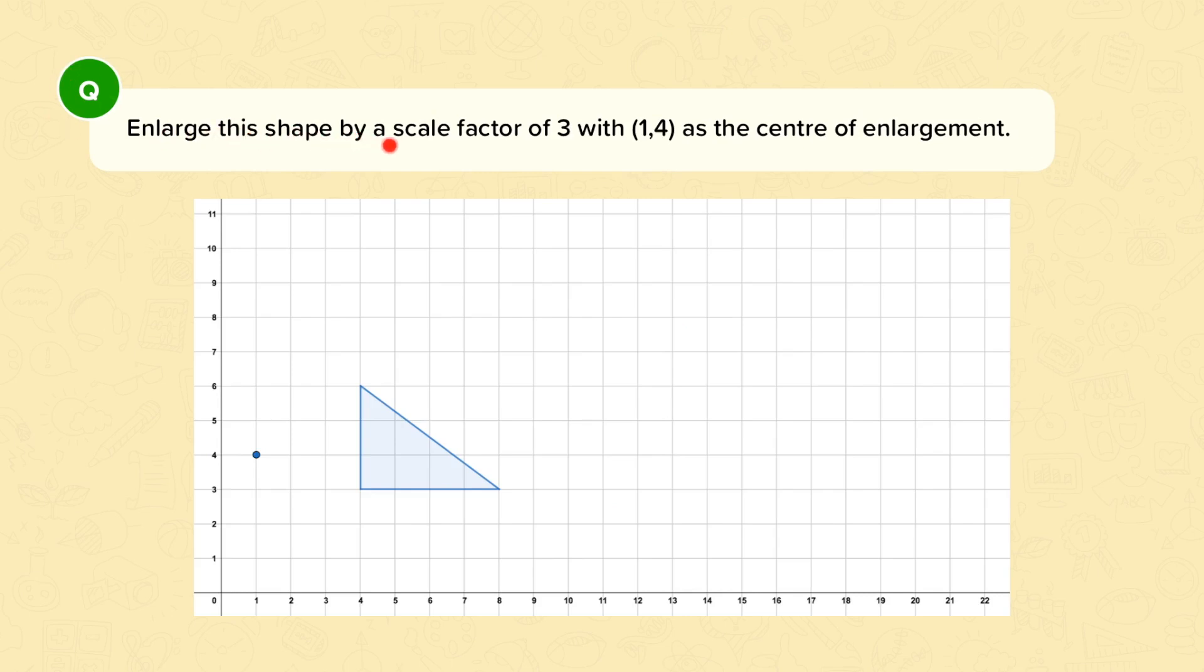Question: Enlarge this shape by a scale factor of 3 with (1,4) as the centre of enlargement. So this time we're not enlarging our shape at the origin (0,0). We've been given a specific coordinate. So the first thing to do is to mark this coordinate on your axes. 1, 4. So there's my centre of enlargement. Also to note what is the scale factor. It is 3. So this shape needs to get 3 times bigger. We're going to do the same process that we did from the origin, but this time we're just going to count from our new centre of enlargement.